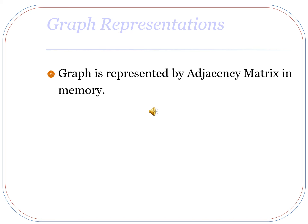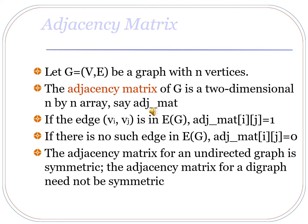Graph representations: a graph is represented by an adjacency matrix in memory. Let G = (V, E) be a graph with n vertices. The adjacency matrix of G is a two-dimensional n by n array. If there is an edge from Vi to Vj in a graph, then the entry in the adjacency matrix is equal to 1; if there is no edge from Vi to Vj, then the entry is equal to 0. The adjacency matrix for an undirected graph is symmetric, and the adjacency matrix for a directed graph need not be symmetric.